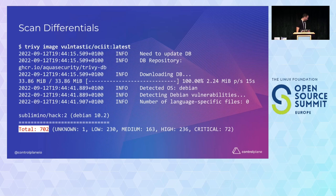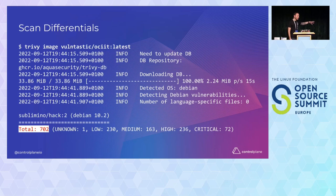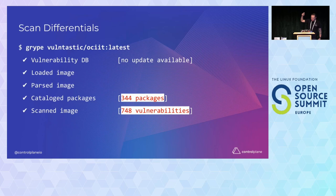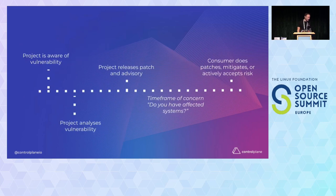The front line of defense are these vulnerability scanning tools. The difference is how vulnerabilities are assessed and discovered in an image. Trivy, with my volumtastic latest image, has 702 instances of vulnerability, whereas Grype has 748. What are the missing 46 vulnerabilities? Do we care about them? Whatever your favorite tool — disparity in results leads to questions: are any of those vulnerabilities critical, remotely exploitable, or on the hot path for an attacker?